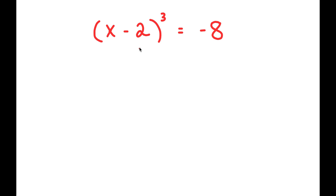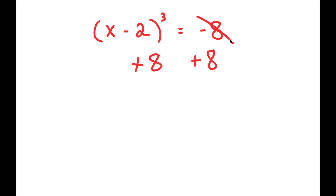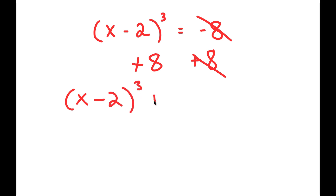In this problem, I have x minus 2 to the power of 3 is equal to negative 8. To solve this, I'm going to first start by adding 8 on both sides. These two cancel out, and I get x minus 2 to the power of 3 plus 8 is equal to 0.